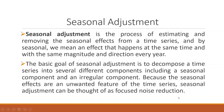It is necessary that we carry out a seasonal adjustment on this series. Seasonal adjustment is a process of estimating and removing the seasonal effects from a time series — an effect that happens at the same time and with the same magnitude and direction every year. The basic goal of seasonal adjustment is to decompose a time series into several different components including a seasonal component and an irregular component. Because seasonal effects are an unwanted feature, seasonal adjustment can be thought of as a focused noise reduction.